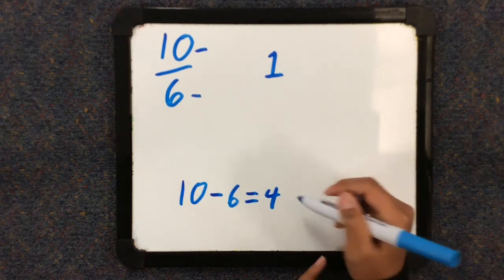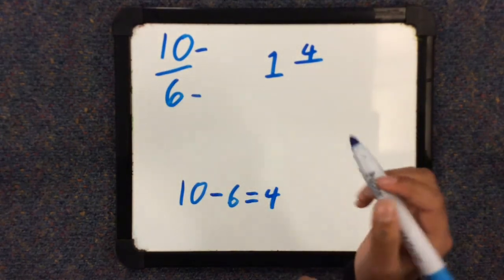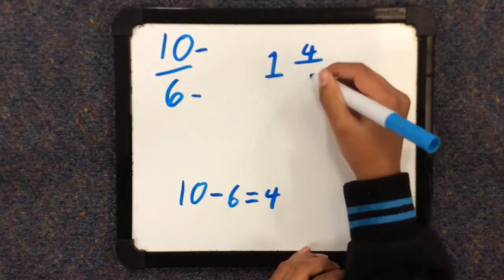Now we get the 4 and put it up here as a numerator because that was the leftover from the 10. And now we use the same denominator.